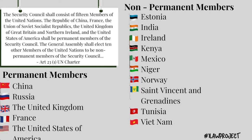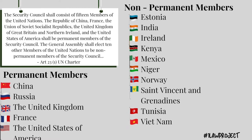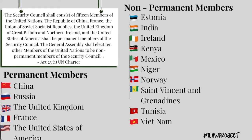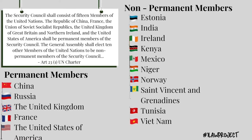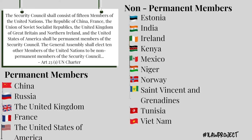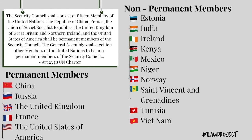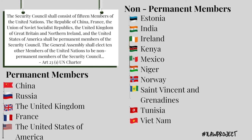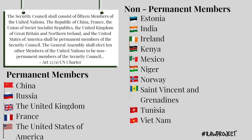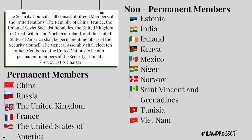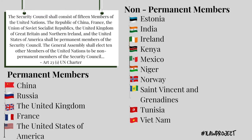Each member of the Council, permanent and non-permanent alike, assumes the presidency of the Council on a monthly basis. The presidency is allocated following the English alphabetical order of the names of the member states. China serves as president for the month of May.